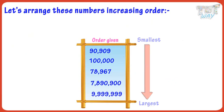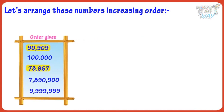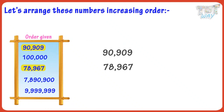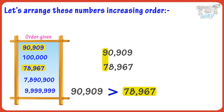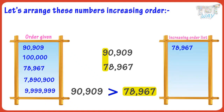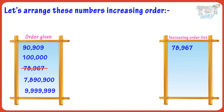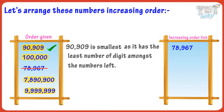Which one is the smallest number here? 78,967 and 90,909 have the least number of digits, so they are the smallest numbers. Now compare them to find the smaller one. Comparing the first digits, 78,967 is the smaller number, so 78,967 is the smallest — place it first and cross it from the list. Now 90,909 is the smallest remaining, as it has the least number of digits among the numbers left, so place it at second place and cross it too.